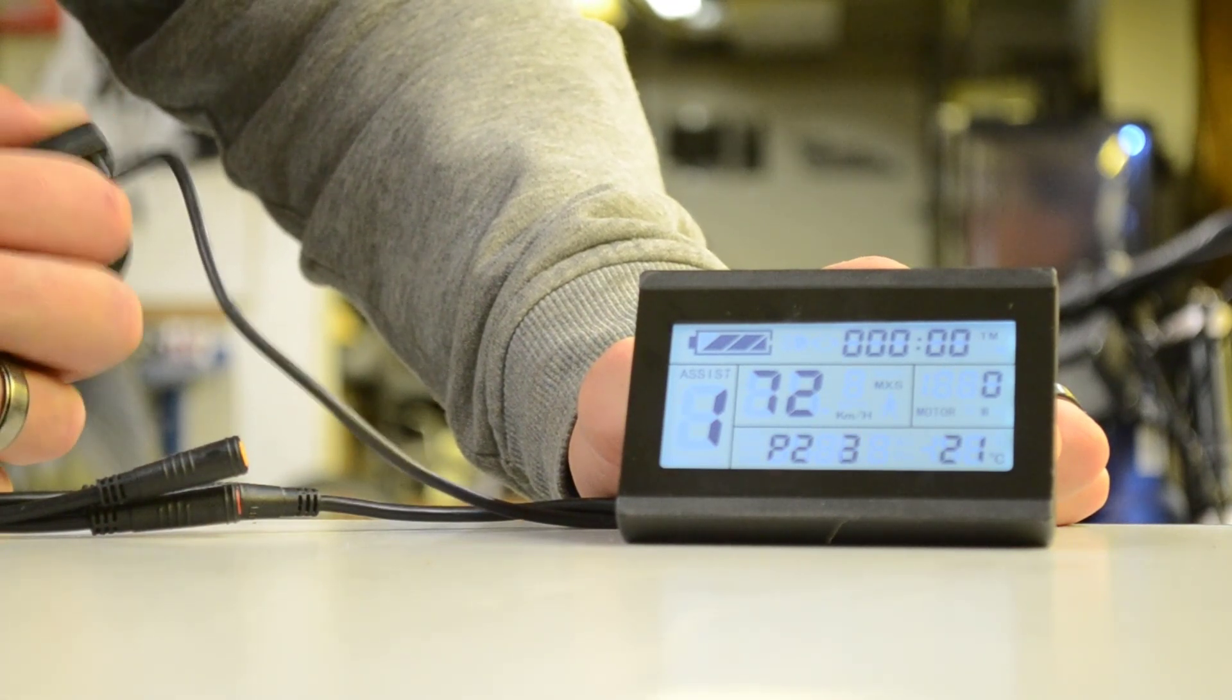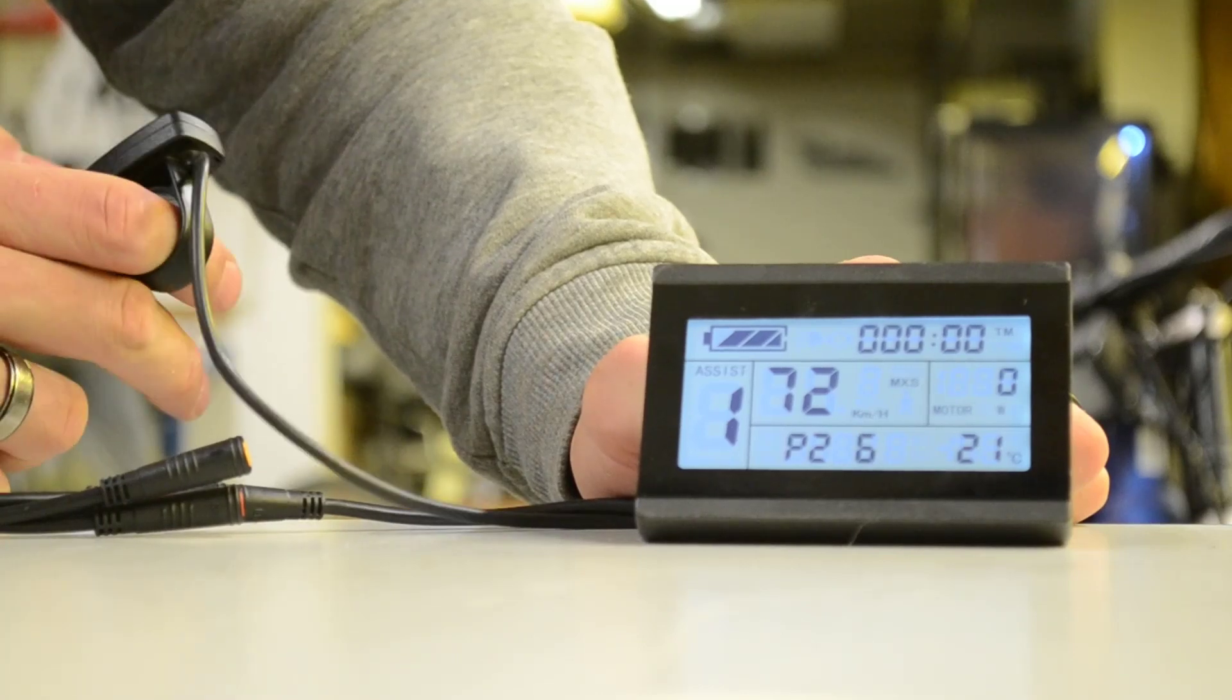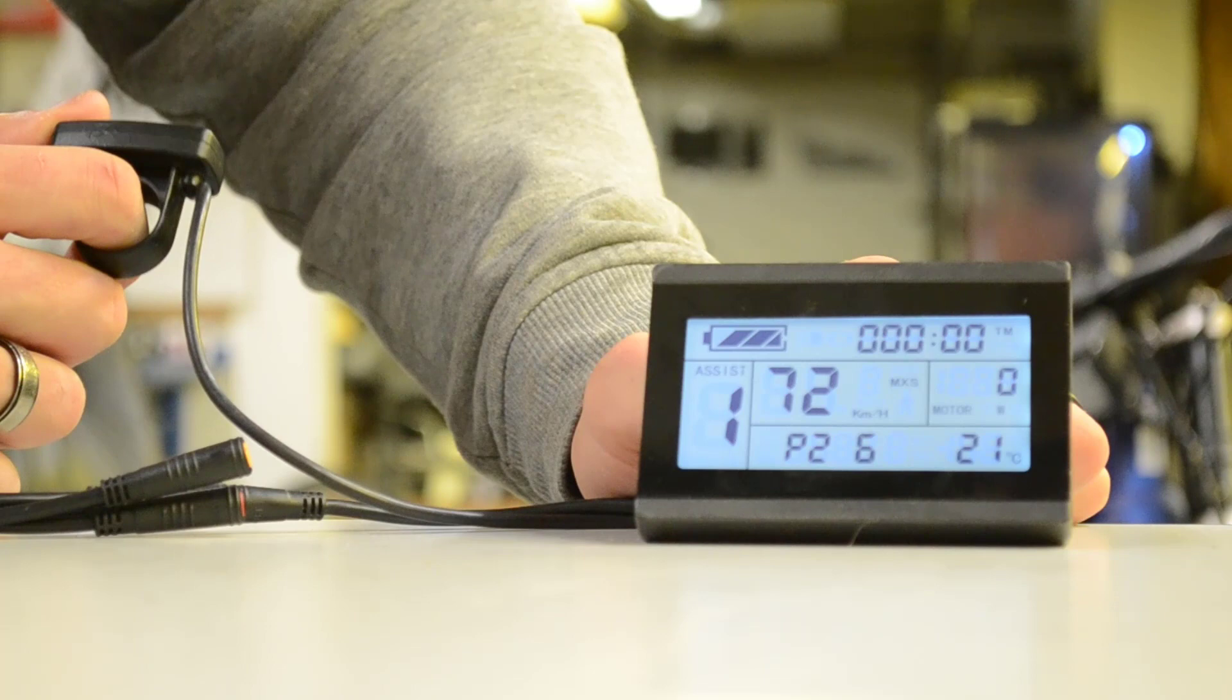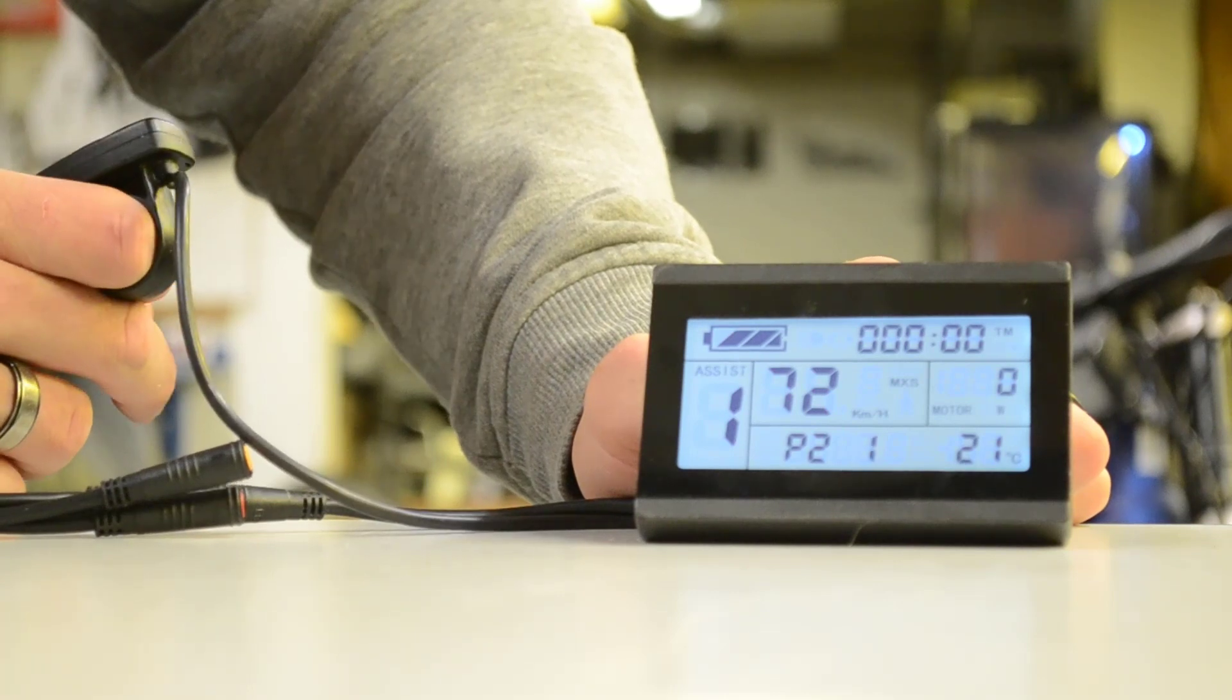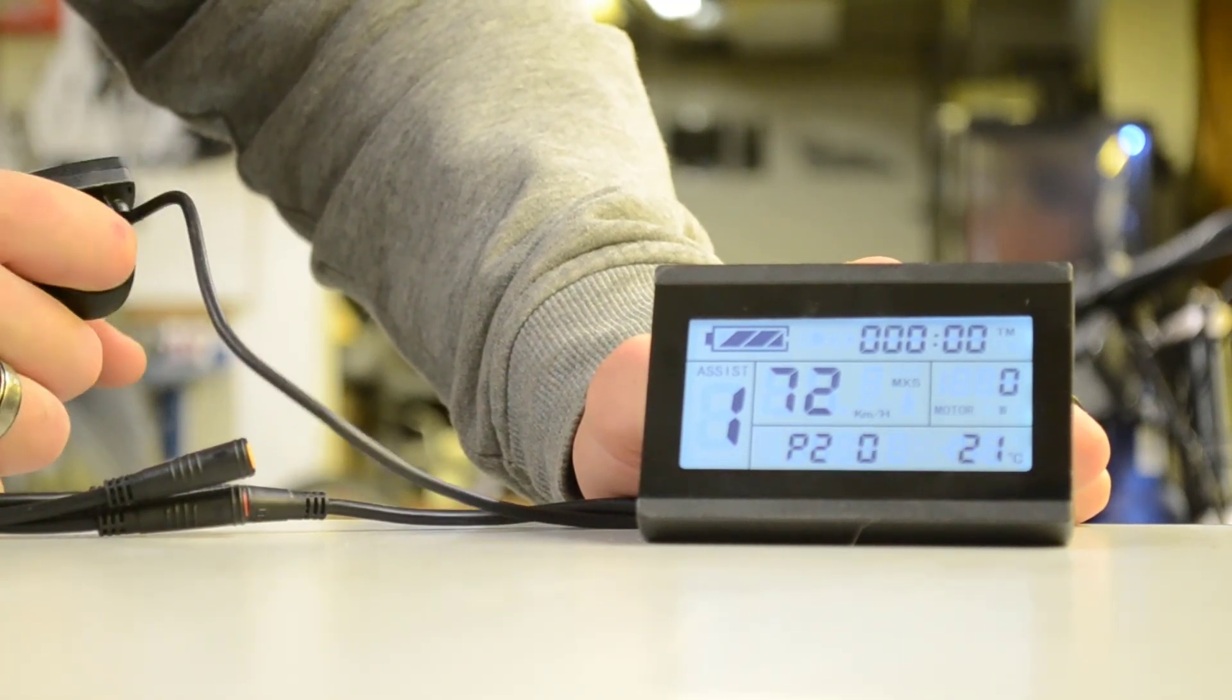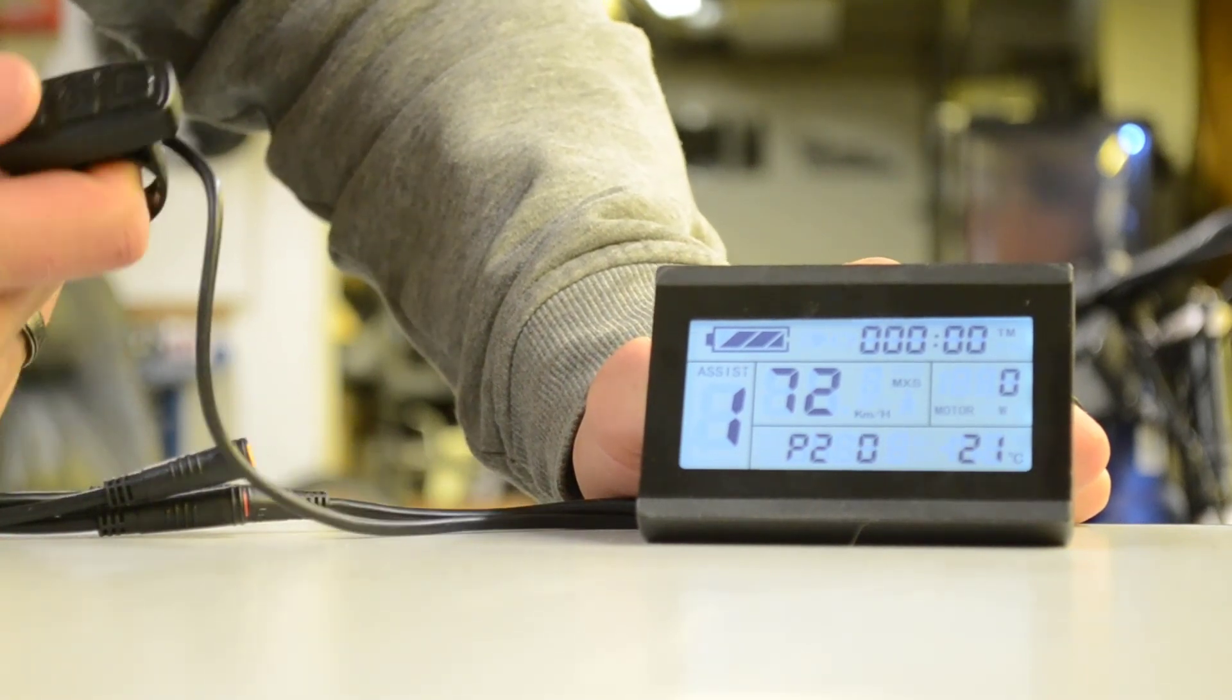A lot of the Bafang motors, they have six magnets inside. So, every revolution, it gets six pulses. So, a lot of Bafang geared motors will be set to six. Most of our motors are set to either one or zero. One for our geared motors, like the MXUS motors, and then zero for any of the thousand watt. Press middle to go to the next.